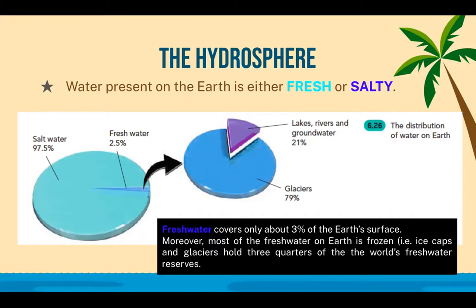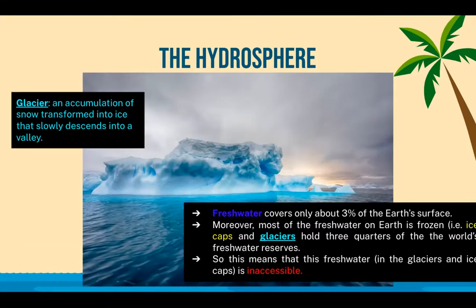This figure from the Observatory 3 textbook shows the distribution of water on Earth. 79% of that fresh water is occupied in glaciers — it's frozen — and then 21% of fresh water is found in lakes, rivers, and groundwater. Unfortunately, 79% of that fresh water is not accessible because it's frozen in glaciers. A glacier is an accumulation of snow transformed into ice that slowly descends into a valley, making this fresh water inaccessible.